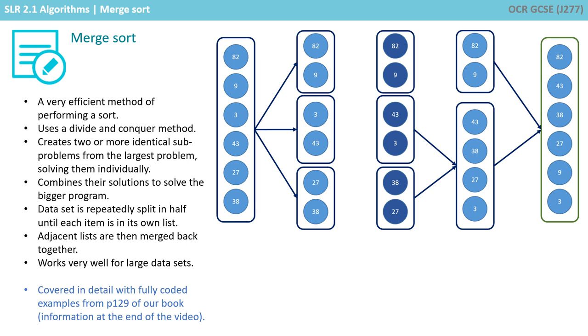The dataset is repeatedly split in half until each item is in its own list. Adjacent items are then merged back together, so this algorithm works very well for large datasets.